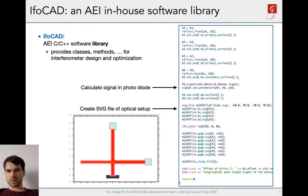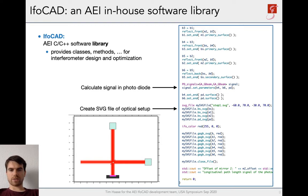Then we set up the signal processing on the photodiode with both incident beams. Finally, we write our setup to an SVG file. IFOCUT also has an inbuilt 3D viewer and supports the old OptoCad format among others. The result of that SVG you can see on the left — this is the setup of the basic IFOCUT project.